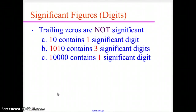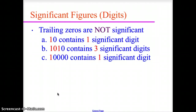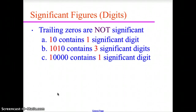A trailing zero, also known as a placeholder zero, is not significant. In the number 10, the zero holds the place of the ones unit and moves the one into the tens unit — so this only has one significant digit. For 1010, the first 1, the middle zero, and the second 1 are all significant, but the final zero is a placeholder and not significant — giving three significant digits. For 10,000, all those zeros are placeholders, and therefore only the one is significant — one significant digit.